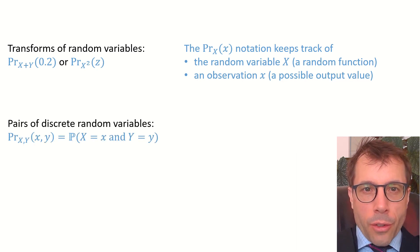OK, next example. If we have a pair of random variables, we generally want to reason about both of them together. And for this, we write PR subscript X comma Y.